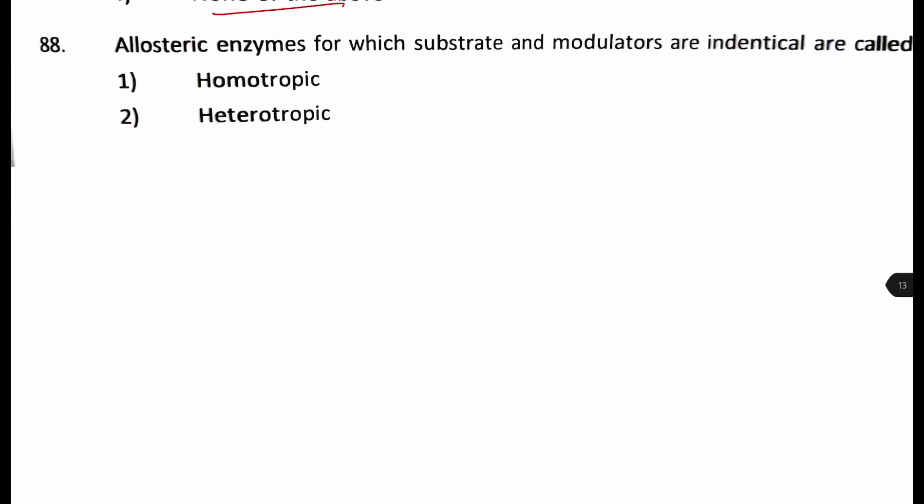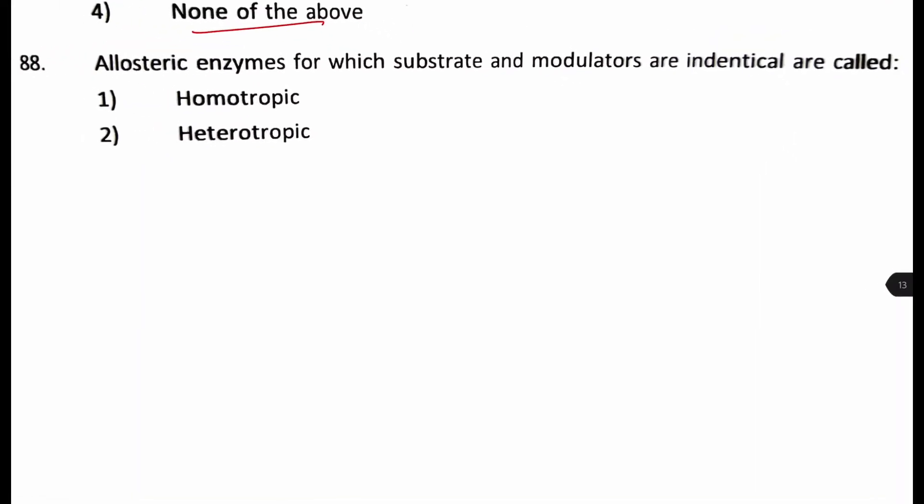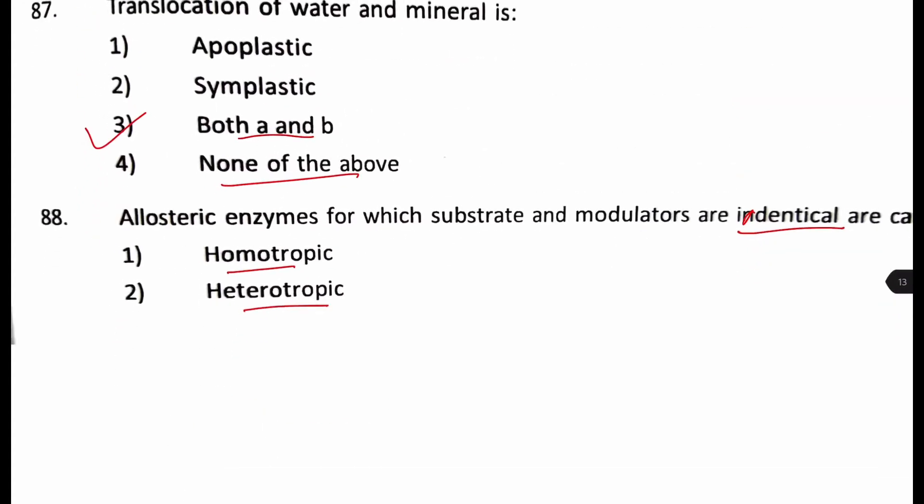Next question. Allosteric enzymes for which substrate and modulators are identical is called what? Is it homotropic, heterotropic, isotropic, or mixotropic? Well, since you have to be careful about the word they have said it is identical. So, we will go for the option homotropic. Our answer will be number one.